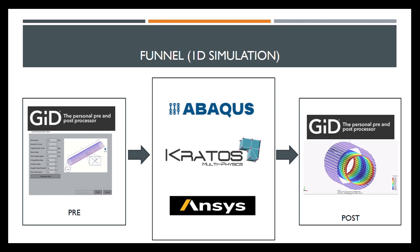Once you create the stent geometry, you can use it with any solver you want, since GID has many options to export both the geometry and the mesh. After running the simulations, GID also provides a powerful post-processor in order to visualize the results and export the output data. There are several tools that can be used in order to obtain the desired information.